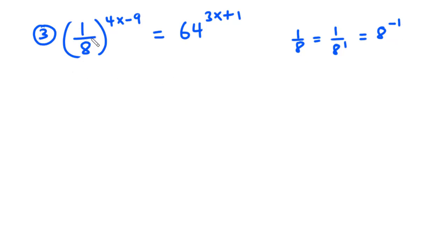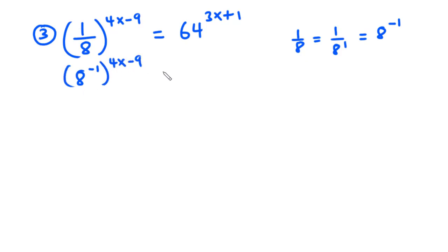So we can simplify 1 over 8 as 8 exponent negative 1, all exponent 4x minus 9. Now 64 is equal to 8 squared.